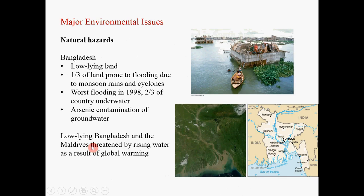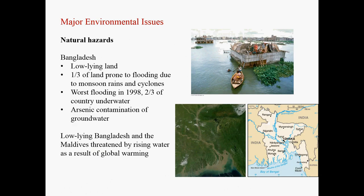In terms of major environmental issues in South Asia, one issue is natural hazards. Take Bangladesh as an example. Bangladesh is a low-lying country, and a vast area of the country is located in the Ganges Delta. Normally, one-third of the country is prone to flooding. Flooding can come in different forms — it could be due to the monsoon rain, hurricanes, or springtime ice and snow melting. During the worst year of flooding, in 1998, two-thirds of the country went underwater. In addition, this country also faces the problem of arsenic contamination of groundwater. Bangladesh, together with Maldives, are all low-lying countries threatened by rising sea levels as a result of global warming.